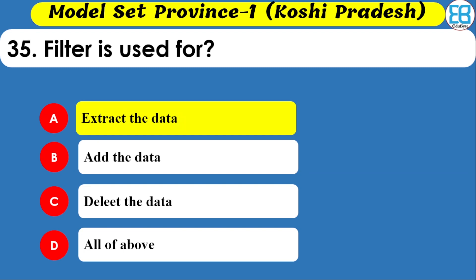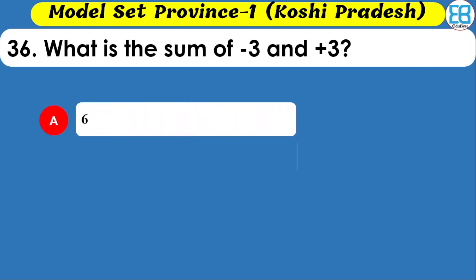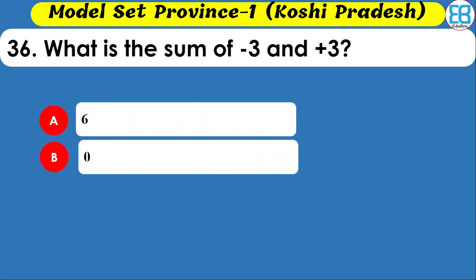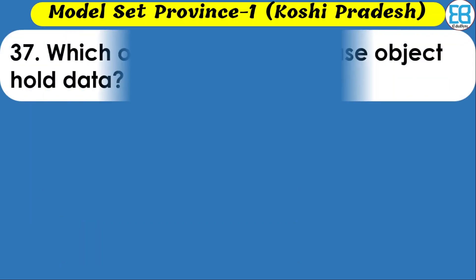What is the sum of minus 3 and plus 3? Options are six, zero, three, and minus six. The correct option is zero — minus 3 plus 3 equals zero.